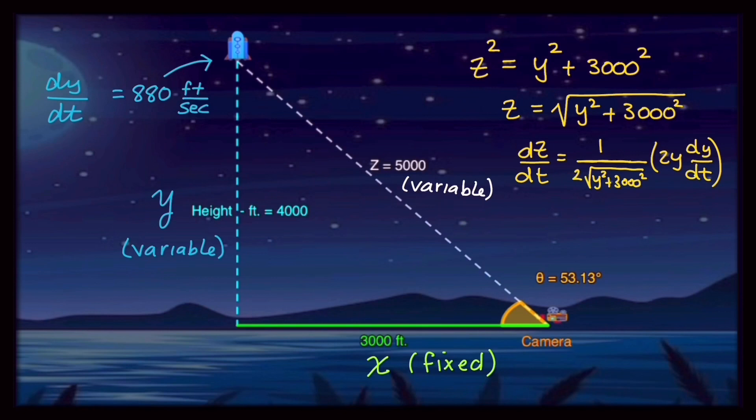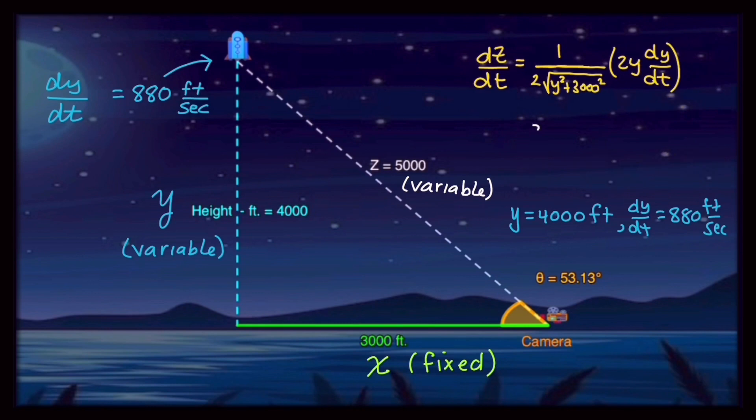Next, we'll want to use the values from our snapshot, so that we can calculate the rate at which the rocket is moving away from the camera. We know that our height, y, is 4,000 feet. And the rate of change, dy dt, is 880 feet per second. So substituting these values into our dz dt equation, the value that we get for the rate of change of z with respect to time, and that is how fast the rocket is moving away from the camera. It works out to be 704 feet per second. Now for the camera, this would indicate how fast to zoom in to keep the rocket scaled to size in view. Level 3 complete.